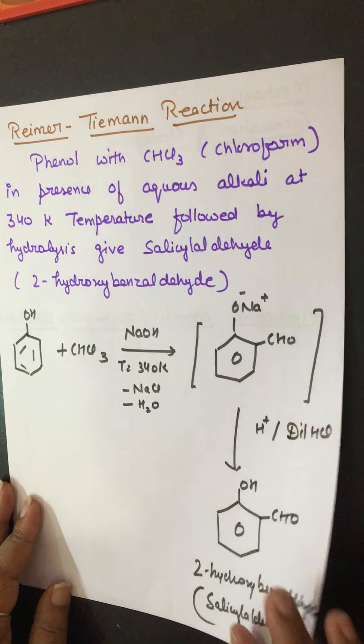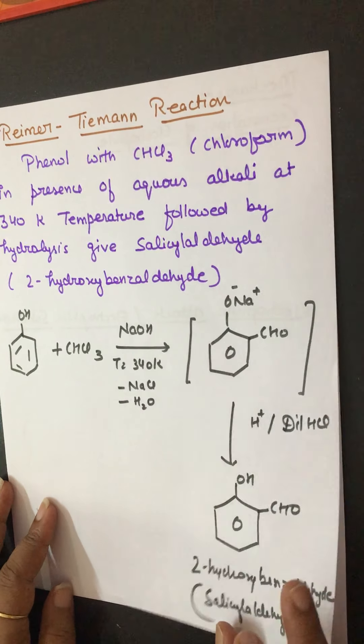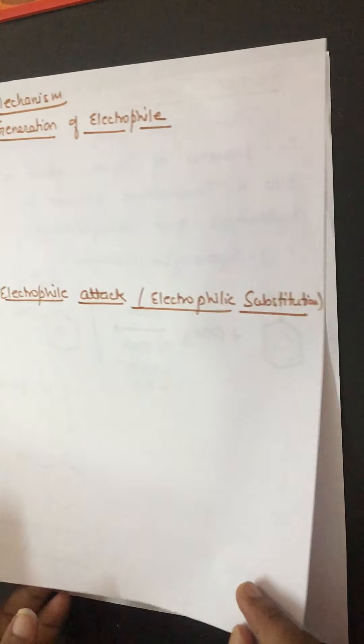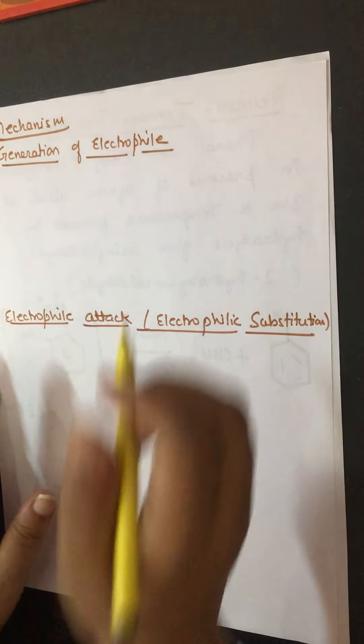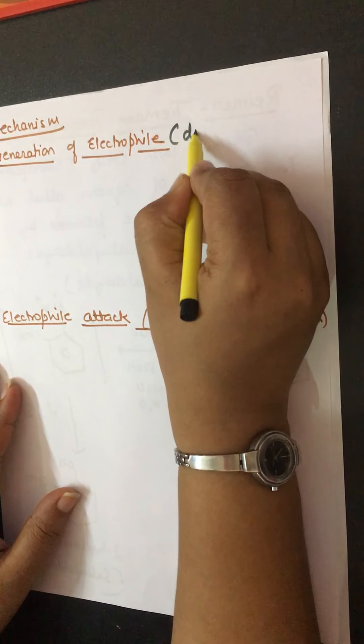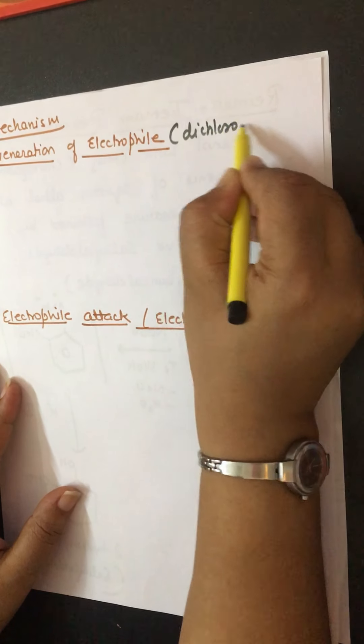And now what is its mechanism? We will consider its mechanism also. Firstly, an electrophile is generated, and in this case the electrophile is dichlorocarbene. What is the electrophile? Dichlorocarbene.